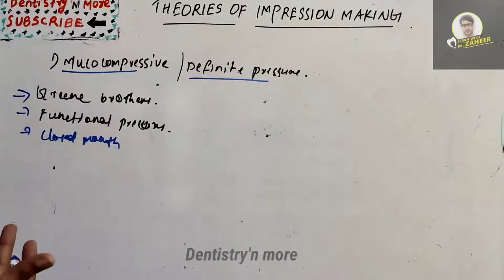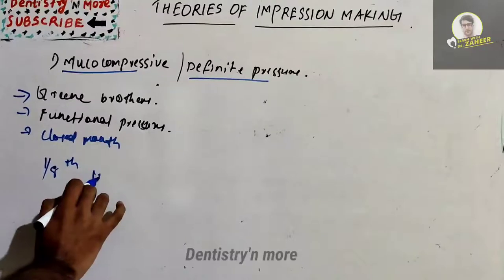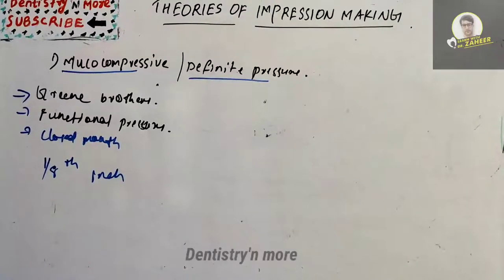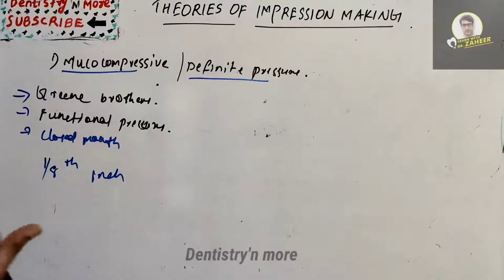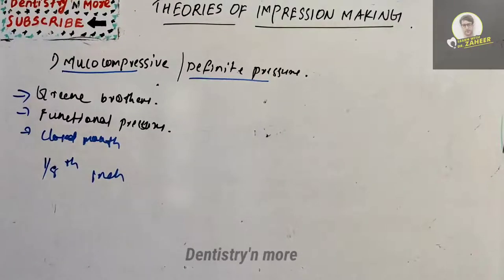The procedure: first, a primary impression is taken with impression compound, then a special tray is made using a shellac base plate with periphery one-eighth inch shorter than the denture outline. The second impression is made with the special tray using compound, trimmed with uniform occlusal surfaces. Areas to be relieved are softened, the impression is inserted in the mouth and held under biting pressure for one to two minutes. Borders are molded by asking the patient to perform functional movements, and the posterior palatal seal is obtained by making the patient swallow under biting pressure.